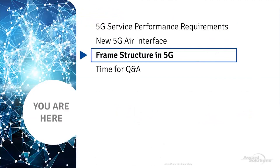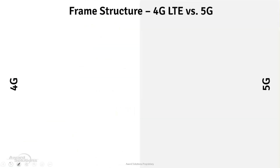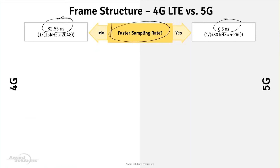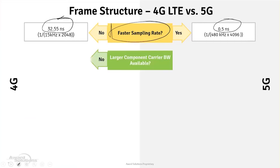Now let's look at the frame structure. The basic time unit in LTE is 32.55 nanoseconds. In 5G we're going to support a much faster rate: 0.5 nanoseconds - a much smaller time interval and much faster sampling rate. This helps us break down processes into much smaller chunks of time, enabling greater flexibility.